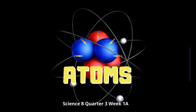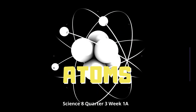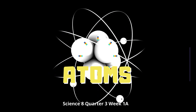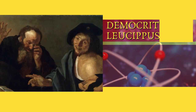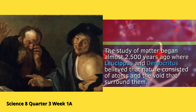The Atoms: Matter is anything that occupies space and has mass. It is made up of the smallest particles called atoms. The word was derived from the Greek word 'atomos', which means indivisible particle. The study of matter began almost 2,500 years ago, where Leucippus and Democritus believed that nature consisted of atoms and the void that surrounded them. They believed that there are many kinds of atoms and each one has definite sizes and shapes.